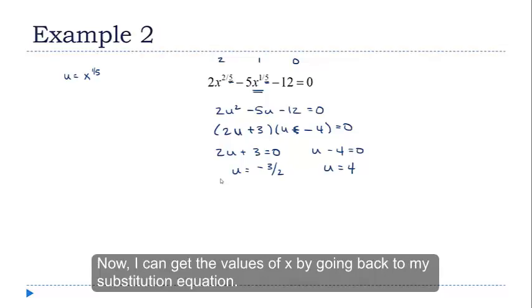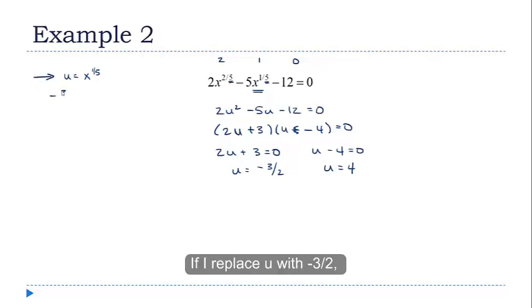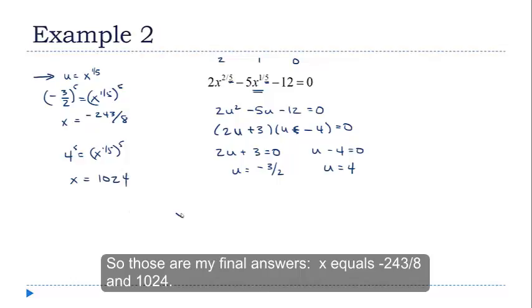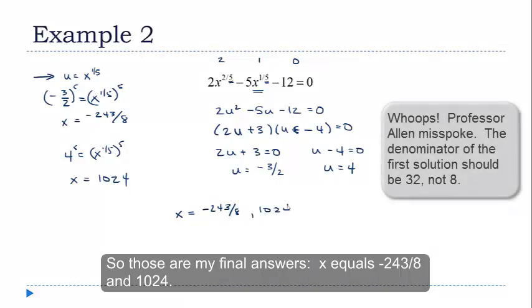Now I can go back and get the values of x by going back to my substitution equation here. If I replace u with negative 3 halves, then raise both sides to the fifth power, I get x equals negative 243 eighths. And if I replace u with 4 and raise both sides to the fifth power, I get x equals 1024. So those are my final answers, x equals negative 243 eighths and 1024.